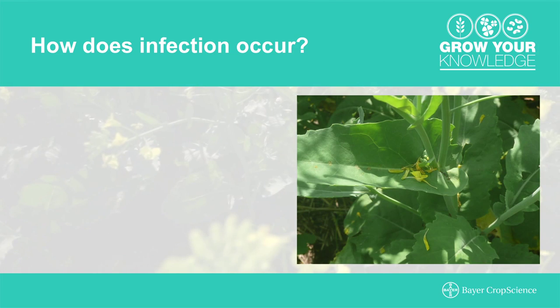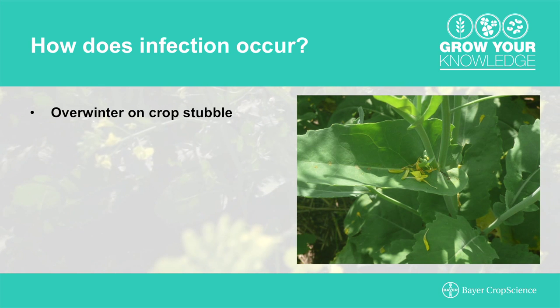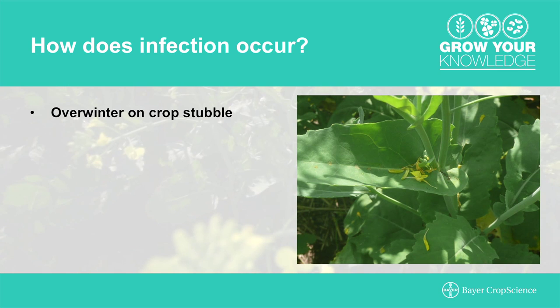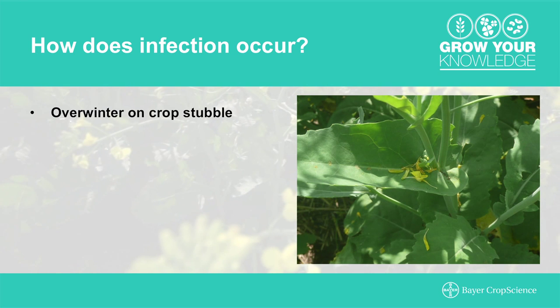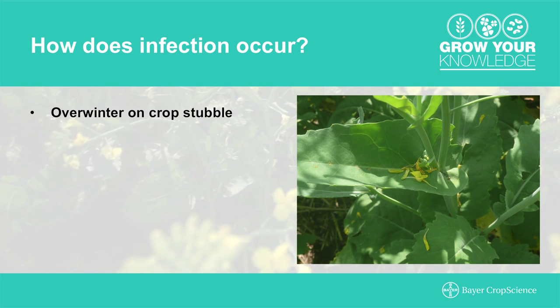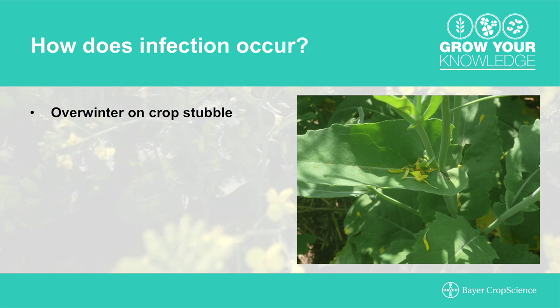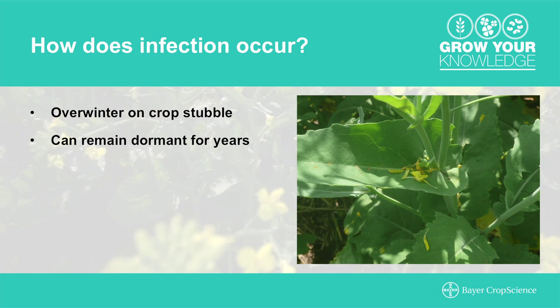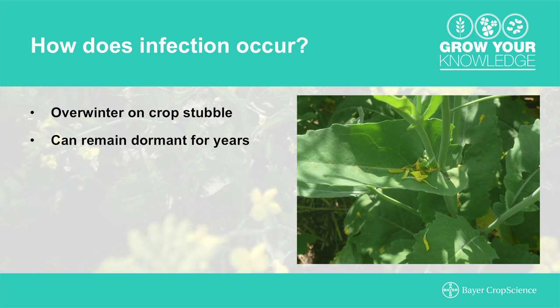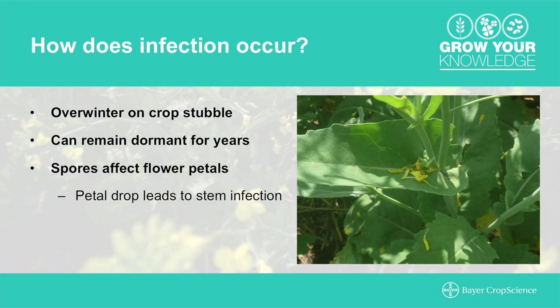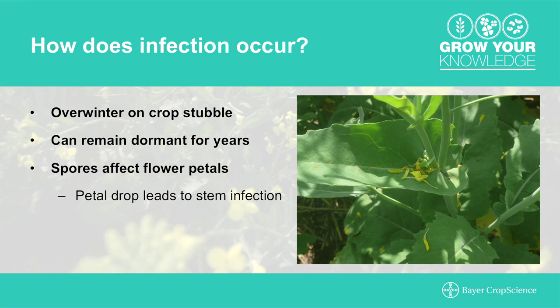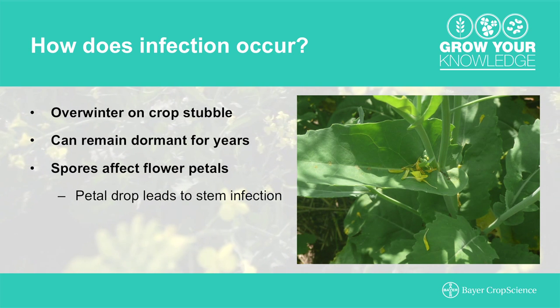How does the infection occur? Sclerotinia overwinters on the crop stubble and residues, which are often carried along for a couple of years due to zero-till practices. The sclerotia bodies — almost like a Tupperware system — live and harbor within the stubble, remaining dormant in the soil for a number of years. Eventually, apothecia, or mushroom-like structures that germinate from those bodies, release spores into the canopy. They infect the flower petals, and once the petals drop back down, stem infections occur.